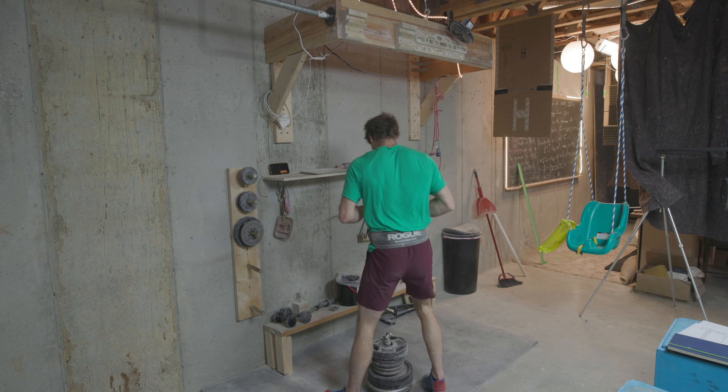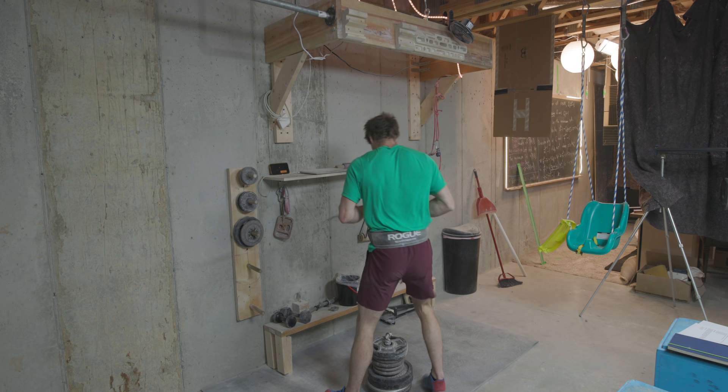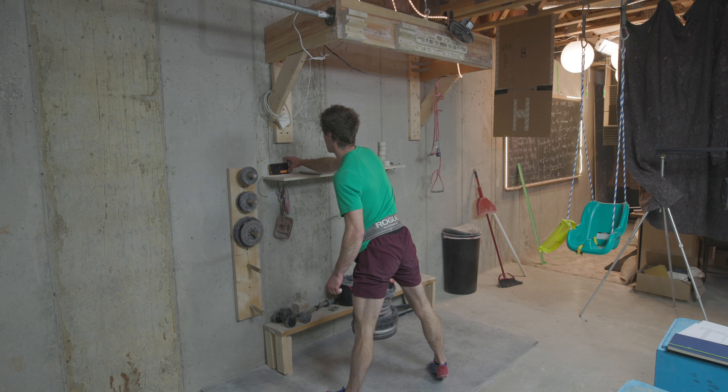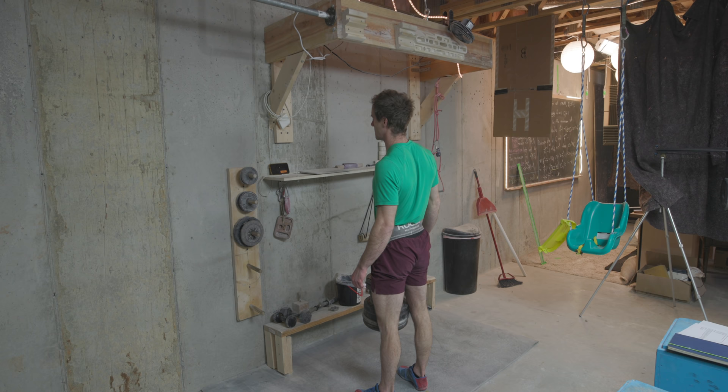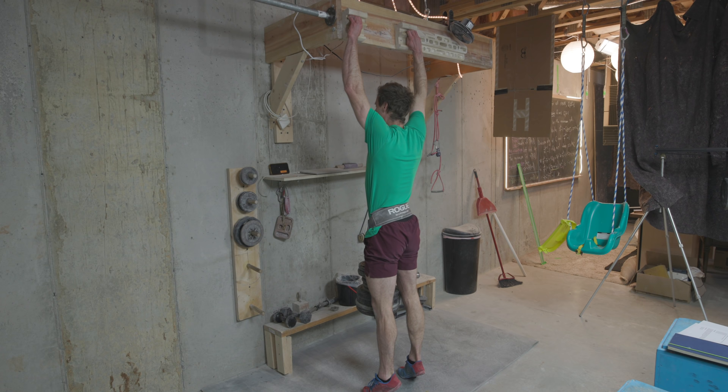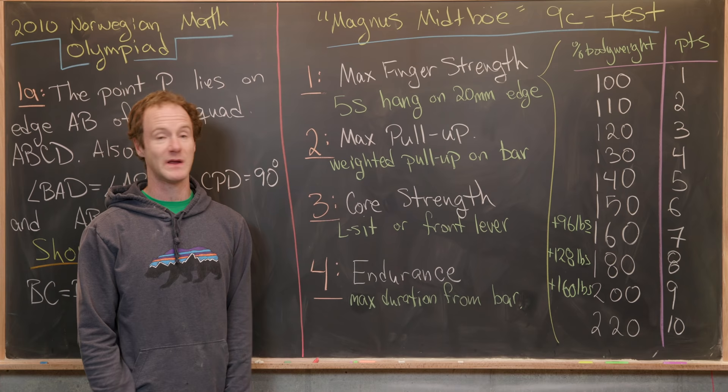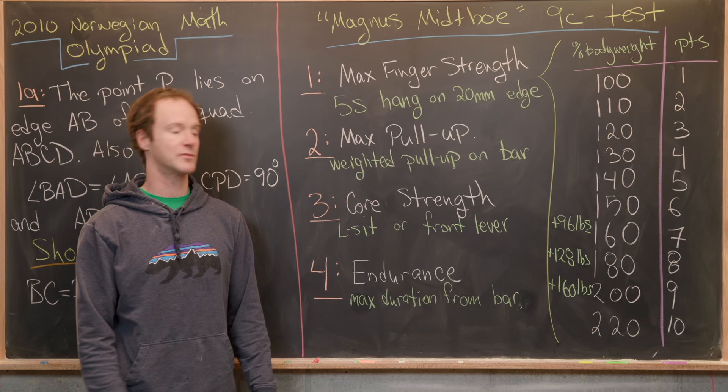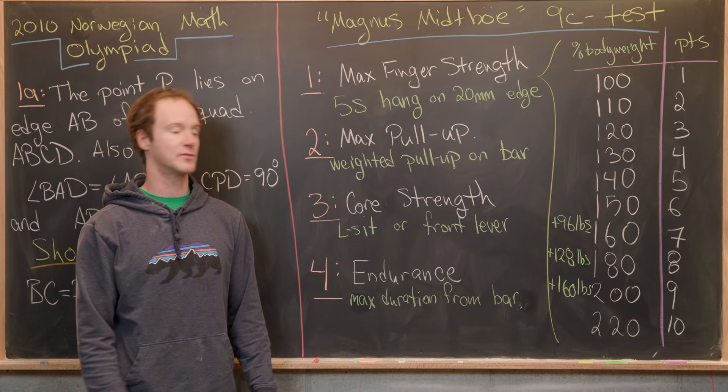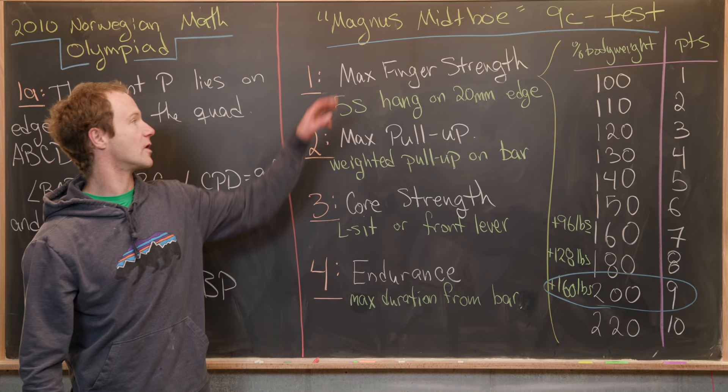Then I moved to plus 160 pounds, which is 200% of my body weight. And I was really surprised that I had any chance of doing this because I thought this would be way above me, but I barely eked it out. I think I went like 5.1 seconds or something. And I knew that I should not try 220% of my body weight. I didn't even check how many pounds that would be because I wouldn't be able to do that as I barely made this 200%. So I ended up with 9 points for the maximum finger strength test.